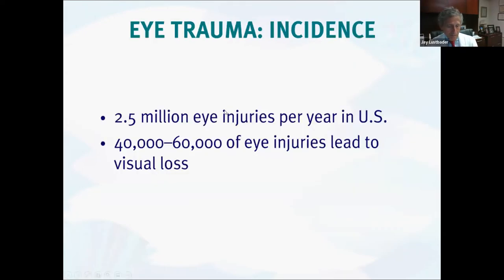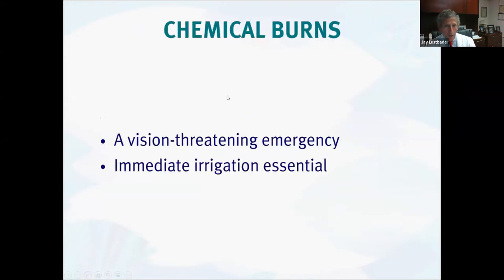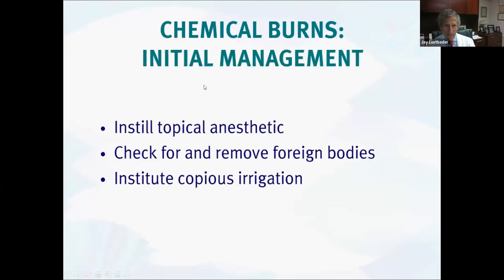Now, eye trauma. There are two and a half million eye injuries every year in the US, and 40 to 60,000 will lead to vision loss — definitely a significant public health issue. One of the most important are chemical burns, which can be a vision-threatening emergency. The key thing with chemical burns, regardless of what caused it: irrigate, irrigate, irrigate. Put some topical anesthetic in, take a look for and sweep with a Q-tip to see if there are any foreign bodies still present, and then copious irrigation — whether an eyewash or fluids available in an emergency department.